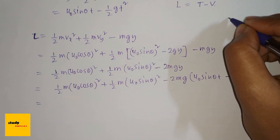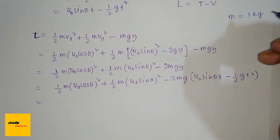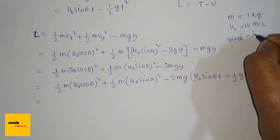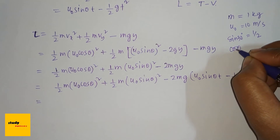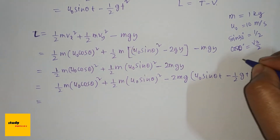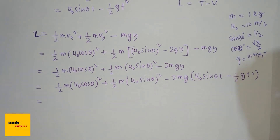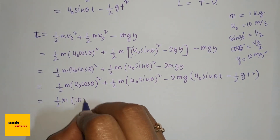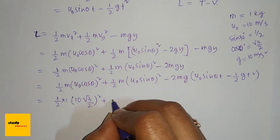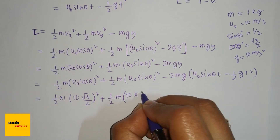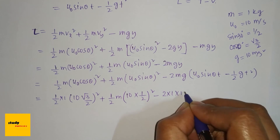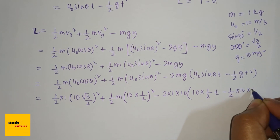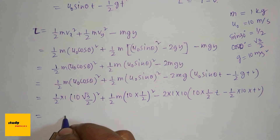Now substituting values: m = 1 kg, u₀ = 10 m/s, sin 30° = 1/2, cos 30° = √3/2, g = 10 m/s². So: ½ × 1 × (10 × √3/2)² + ½ × 1 × (10 × 1/2)² − 2 × 1 × 10 × (10 × 1/2 · t − ½ × 10 × t²).